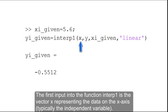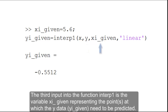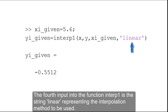The first input into the function INTERP1 is the vector x representing the data on the x-axis. The second input is the vector y representing the data on the y-axis. The third input is the variable xi_given representing the point at which the y-data needs to be predicted. The fourth input is the string 'linear' representing the interpolation method to be used.